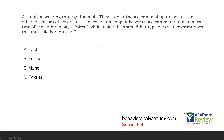Question four. A family is walking through the mall. They stop at the ice cream shop to look at the different flavors. The ice cream shop only serves ice cream and milkshakes. One of the children says 'pizza' while inside the shop. What type of verbal operant does this most likely represent? To figure this out, you need to understand what evokes different verbal operants. For the exam, know what evokes, what reinforces, whether there is form similarity, and whether there is point-to-point correspondence.